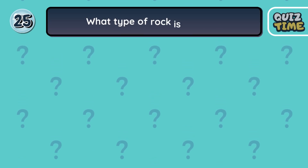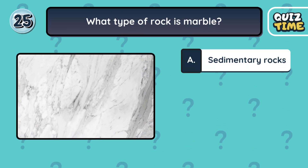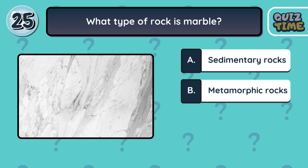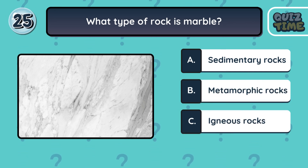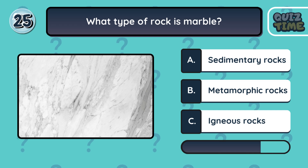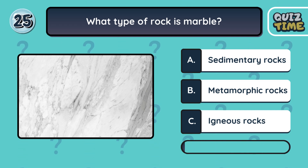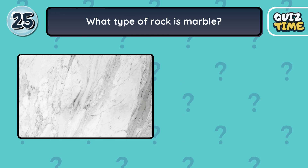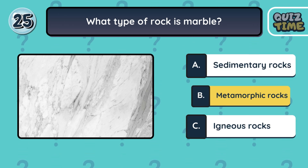Number 25. What type of rock is marble? A. Sedimentary rocks. B. Metamorphic rocks. C. Igneous rocks. The correct answer is B. Metamorphic rocks.